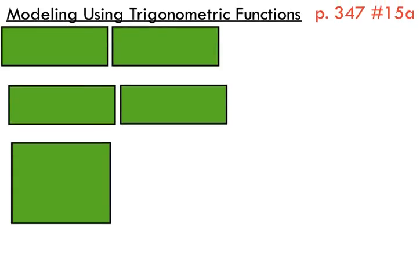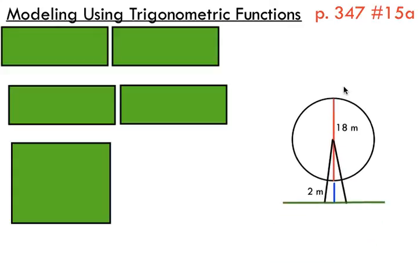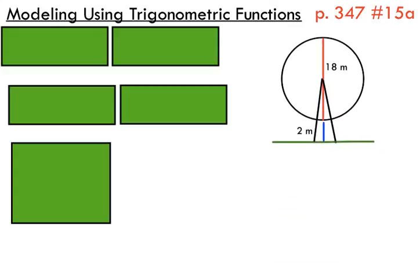So what I like to do first with these modeling problems is always draw a diagram. I've just drawn a little Ferris wheel. You can see we've got the diameter of 18 meters. We know this thing reaches its lowest point just two meters above the ground. We're gonna use those measurements to determine the max and min points of our Ferris wheel.